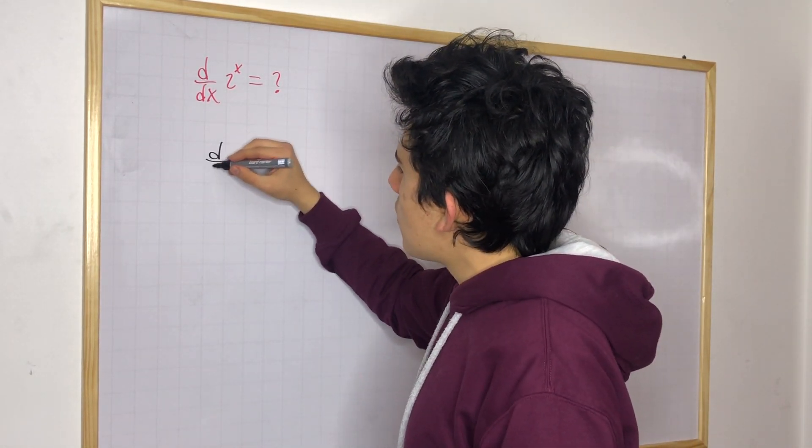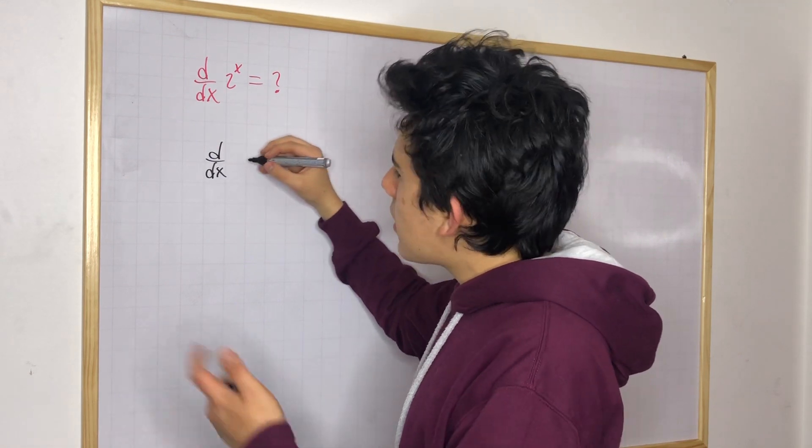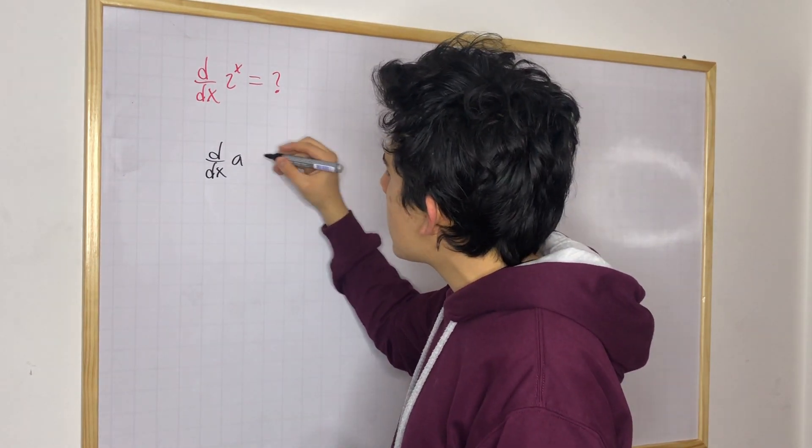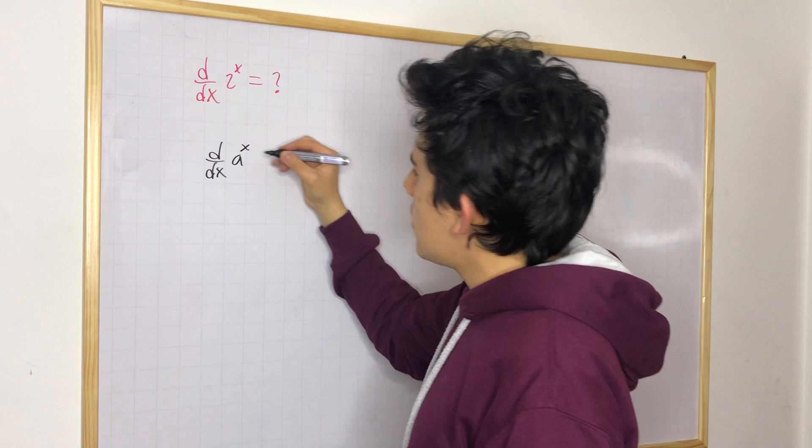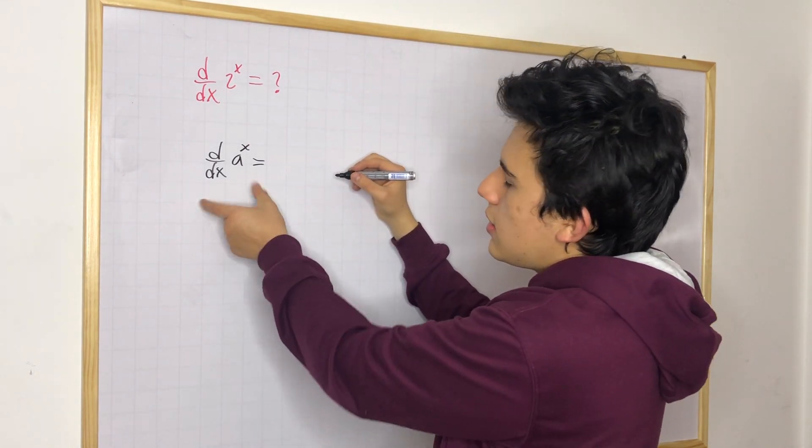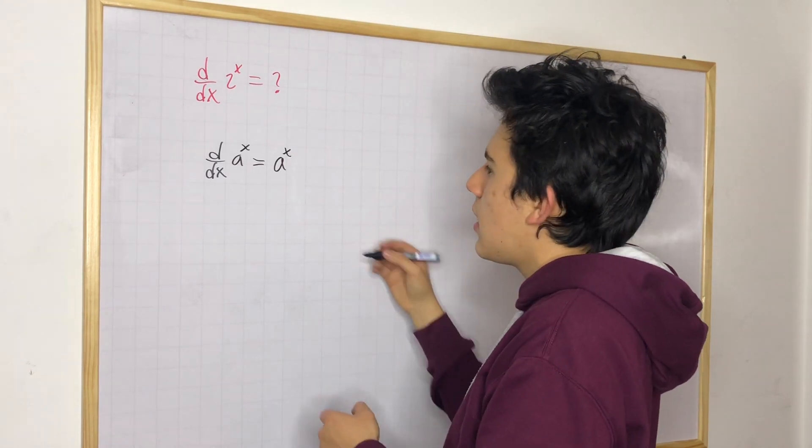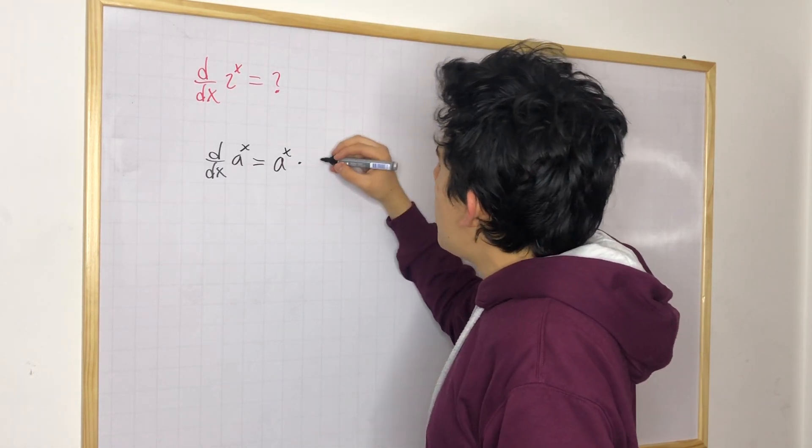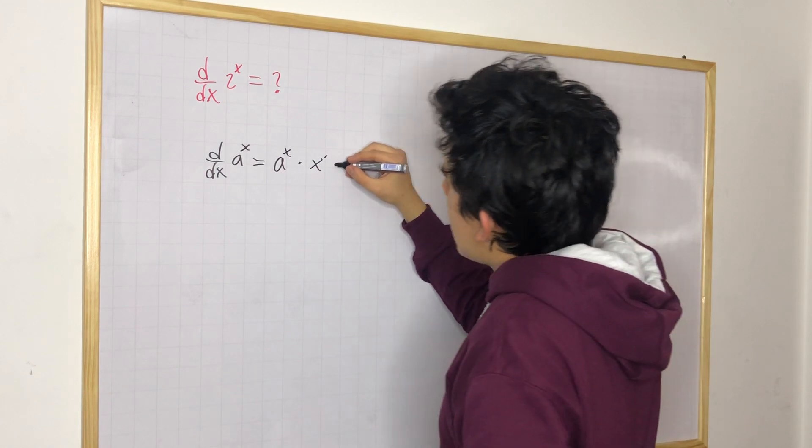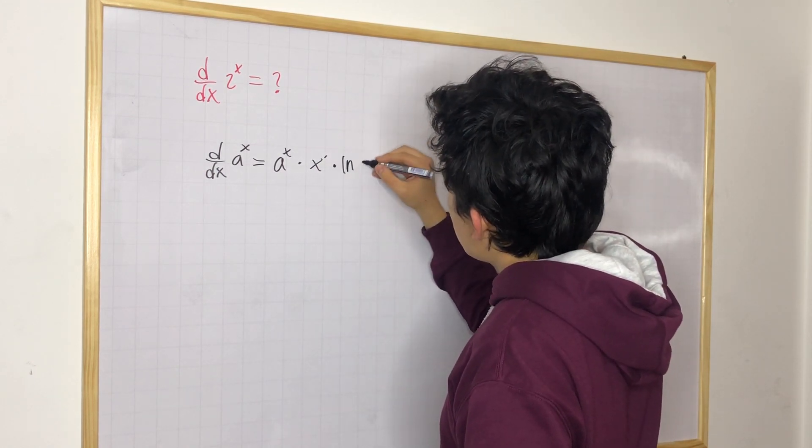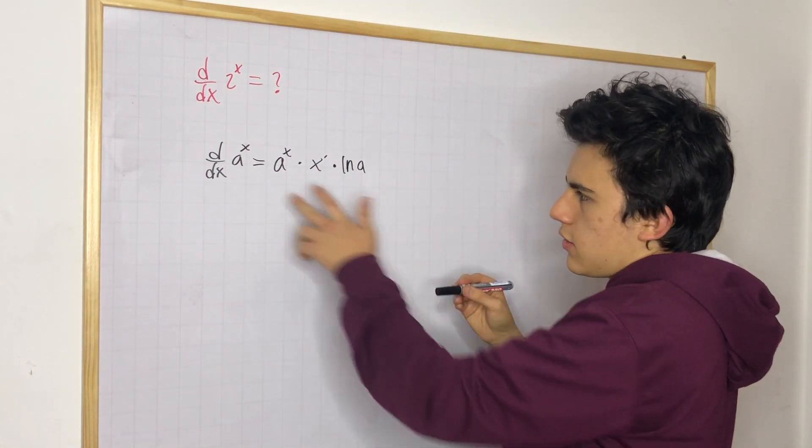So if we have the derivative for any constant, I'm going to say a is a constant and x is our input. What you're going to do in this case is pretty simple. You're just going to write the exact same expression that you have times the derivative of the exponent and times the natural logarithm of the constant.